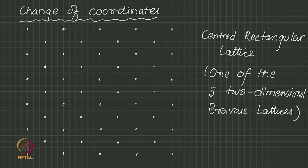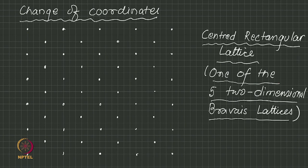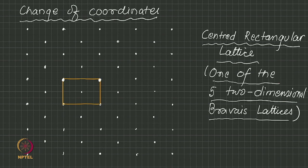As an example from crystallography, I am showing you here what is called a centered rectangular lattice. This is one of the 5 Bravais lattices in 2 dimensions — you might not have thought much about 2 dimensions, but in 2 dimensions there are 5 Bravais lattices. You can see that the unit cell is a rectangle and the lattice points are not only at the corners but also at the center. That is why the name: centered rectangular lattice is a 2-dimensional analog of the face-centered cubic lattice.